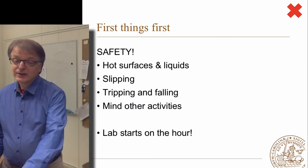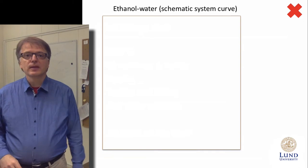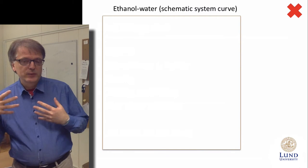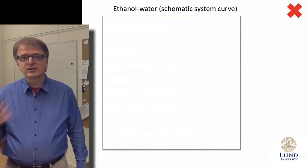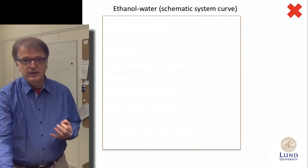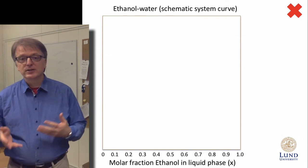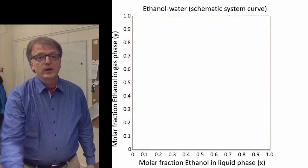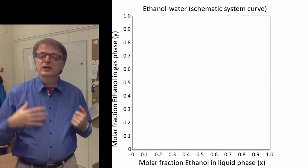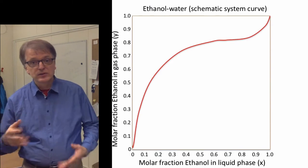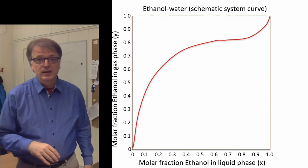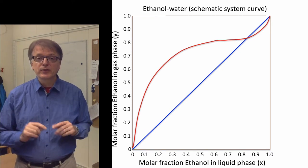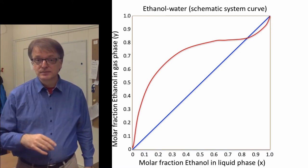To understand the lab you need to understand system curves. We're going to look at the ethanol-water system and draw a schematic system curve. A system curve relates the molar fraction of ethanol in a boiling liquid with the molar fraction of ethanol in a condensing gas. If we draw in the diagonal as a comparison, you can see that this system curve crosses the diagonal — we will come back to that.